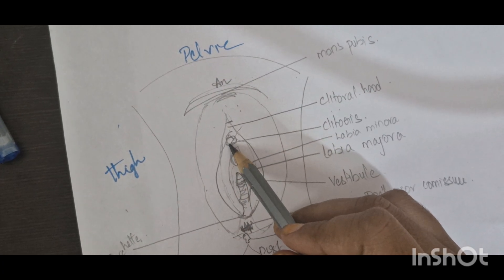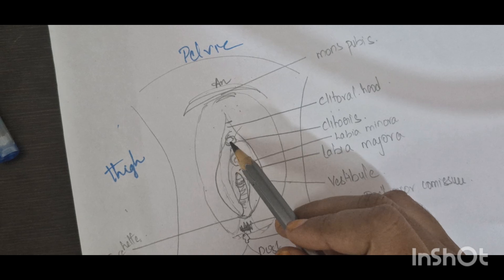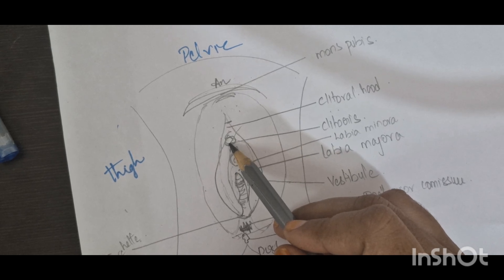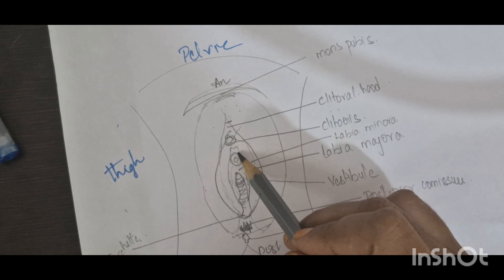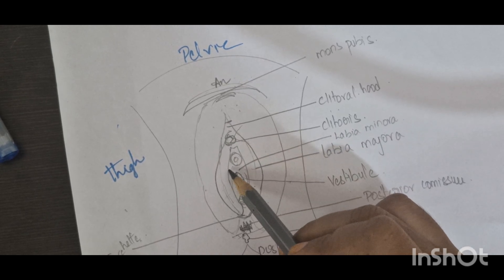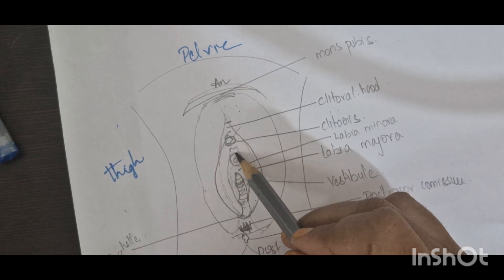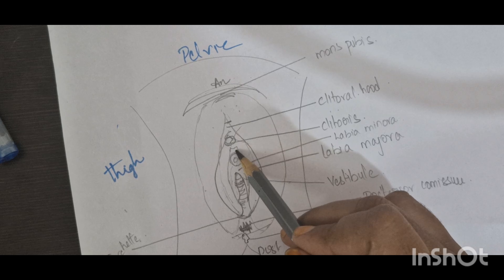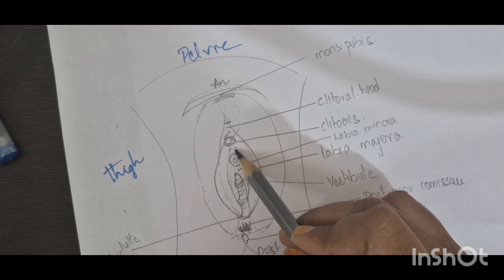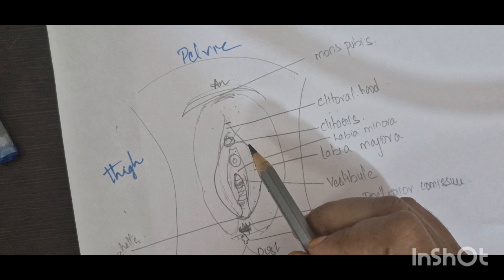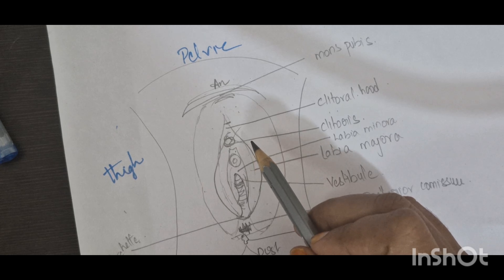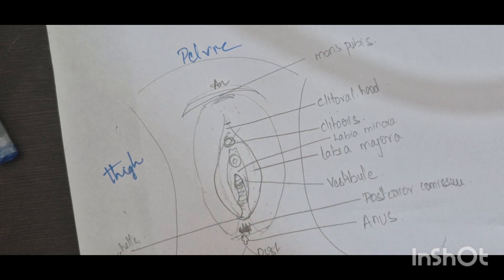The clitoris is a small sensitive organ located at the top of the labia minora. It is rich in nerve endings and plays a significant role in sexual pleasure. It corresponds to the penis in the male.